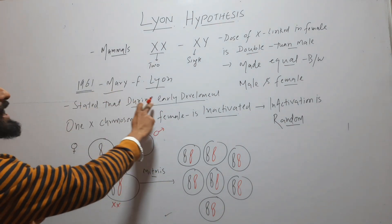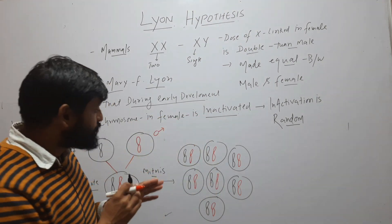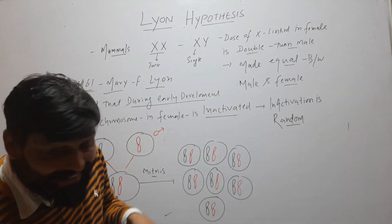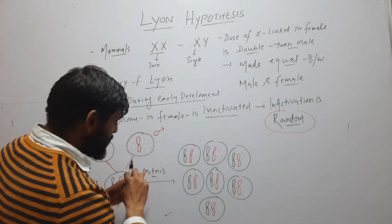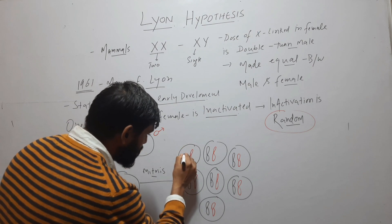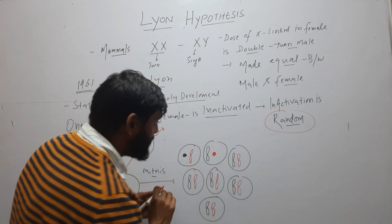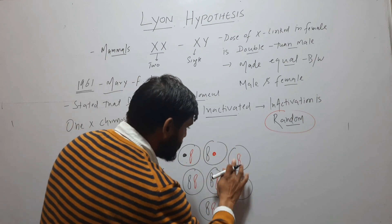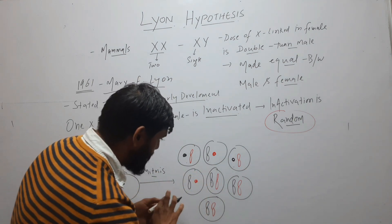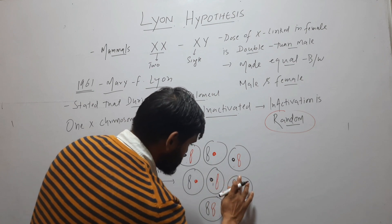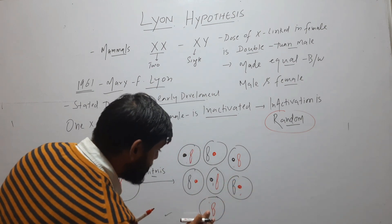What Mary Lyon is saying is that during early development, one X chromosome in females is inactivated — so one X out of two will be inactivated. And this inactivation is random, meaning in one cell this chromosome is inactivated, in another cell maybe a different chromosome is inactivated. So this inactivation is random.